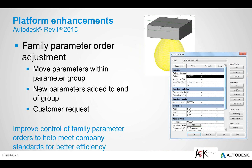Family parameter order adjustment is another handy one. When you are creating your families and populating all of your parameters, there was no rhyme or reason as to the order of the parameters — sometimes it was random, sometimes descending, and there was no way of reordering. They have now added an option to reorder parameters in the family editing environment, with move up and move down buttons in the Family Types dialog box, as well as sorting order options.